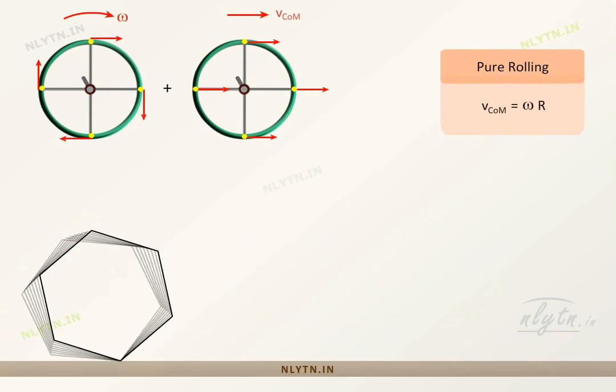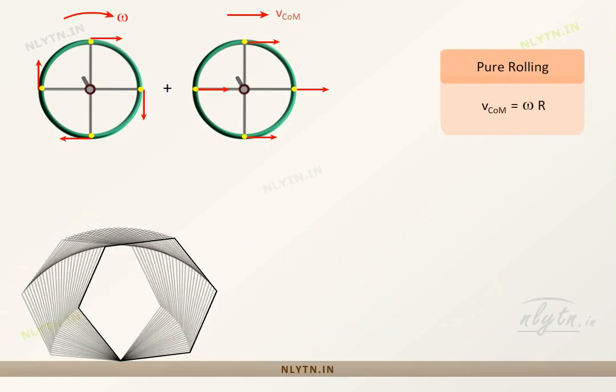If we consider such a motion of this object, then though the object is moving forward, but its point of contact does not move. After a while, the point of contact is a different point,